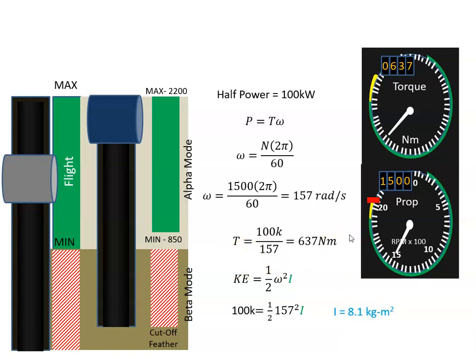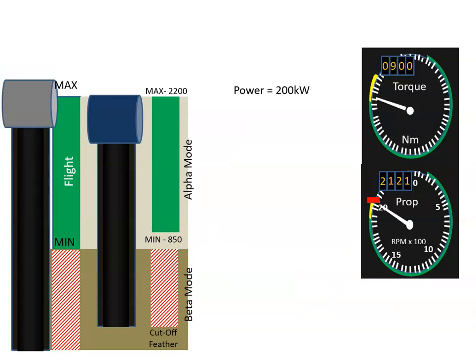So what happens when the power lever is pushed forward? When it's pushed forward we've gone from half power to full power, so we've gone to 200 kilowatts.